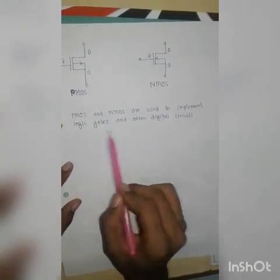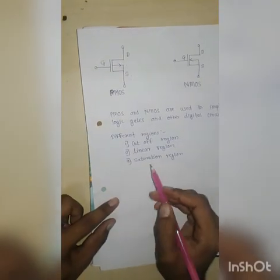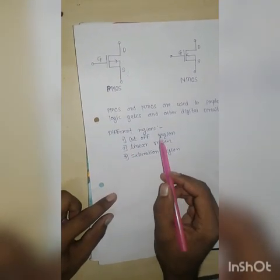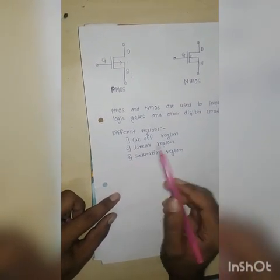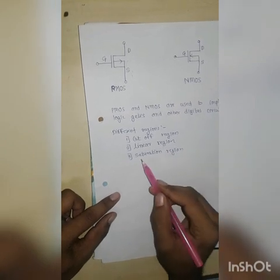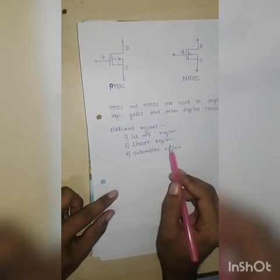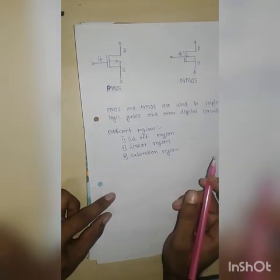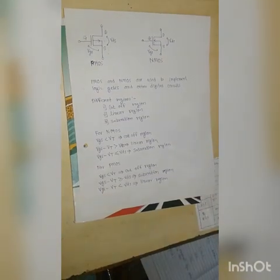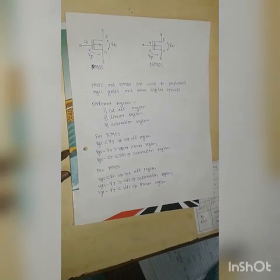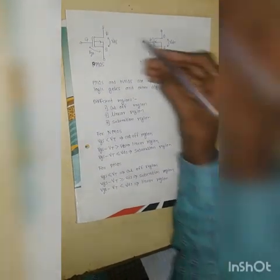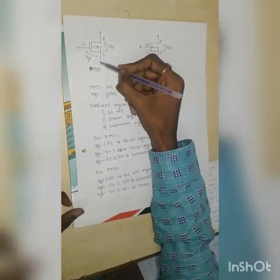Generally, PMOS and NMOS are used to implement logic gates and other digital circuits. There are three different operating regions of PMOS and NMOS: the first region is the cutoff region, the second is the linear region, and the third is the saturation region.